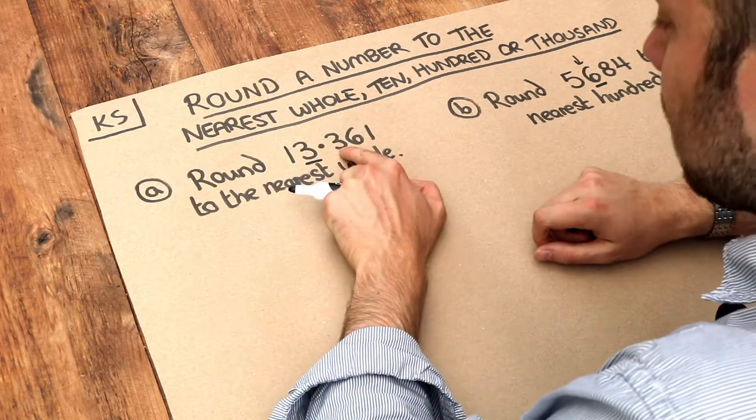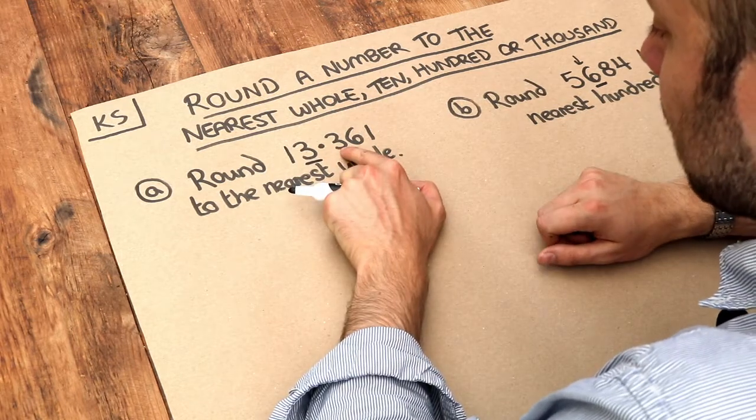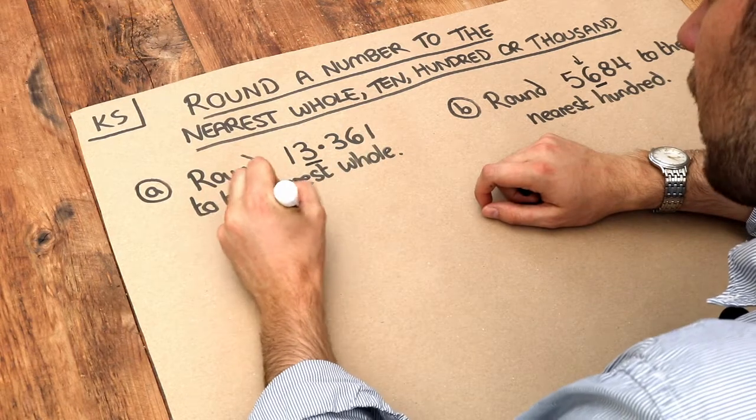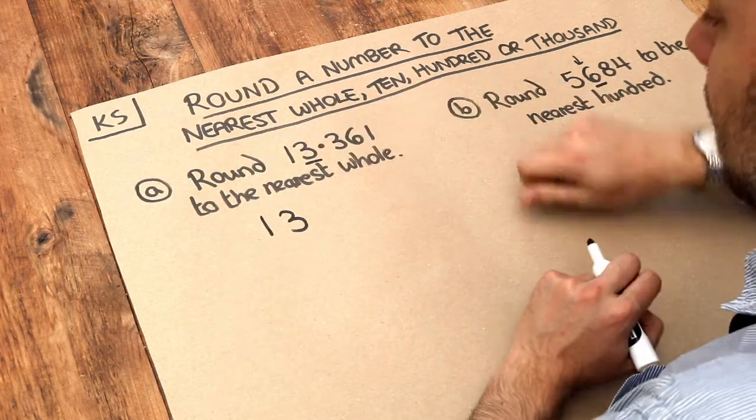So in this case, is that 5 or more? No, it isn't. So therefore that 3 stays as it is, so we have 13, and we just discard everything after it.